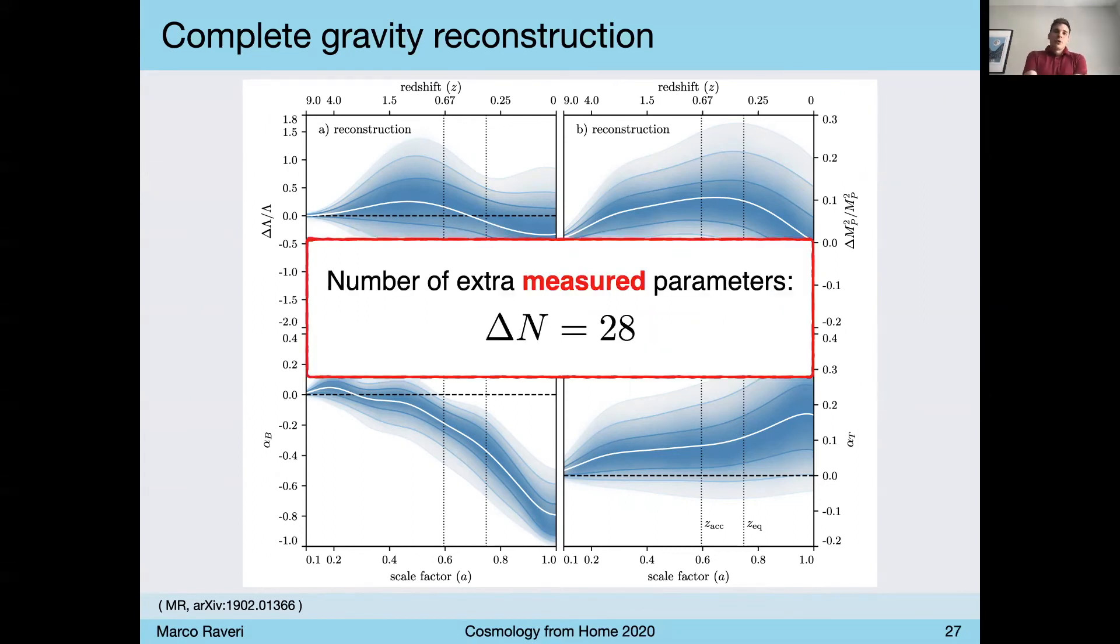One incredible thing that I want to highlight is that we can go through the statistical exercise of understanding how many of these frequencies, how many of these parameters are measuring. And it turns out that this is the astounding number of 28. There are 28 frequencies in these functions of time that are just measured by data, which is an incredible show off of data power, I believe. Some of these numbers are measured to be zero. And some of these numbers are measured not to be zero.